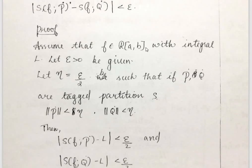Assume that f is an element of R[a,b] with integral value L. If f is Riemann Integrable, then the integral value equals L. Let epsilon greater than 0 be given. Set eta equal to epsilon by 2. If P-dot and Q-dot are tagged partitions with norm of P-dot less than eta and norm of Q-dot less than eta, then |S(P-dot) − L| < epsilon by 2.